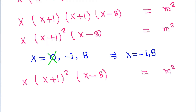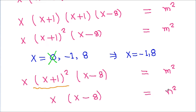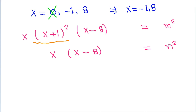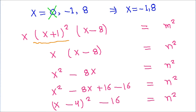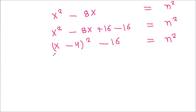Since x plus 1 whole squared is always a perfect square, x times x minus 8 must also be a perfect square, so we write x times x minus 8 equals n squared. This can be rewritten as x minus 4 whole squared minus 16 equals n squared. Now x minus 4 whole squared is a perfect square and n squared is also a perfect square, so the difference of two squares equals 16.